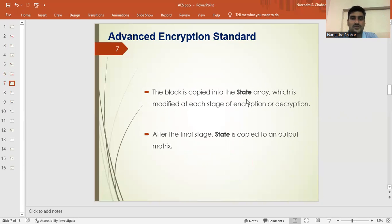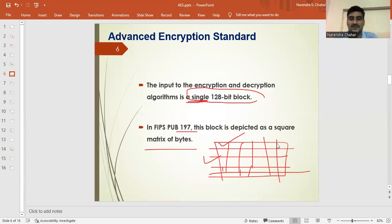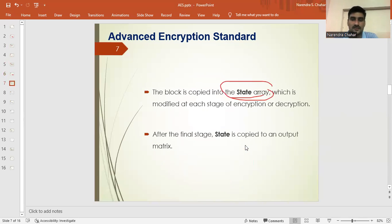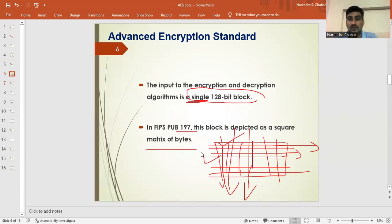A block is copied into the state array, which is modified at each stage of encryption and decryptions. This complete matrix is an array. We are filling all the locations here. After the final stage, the state is copied to an output matrix. This is the input matrix and there will be an output matrix also here.